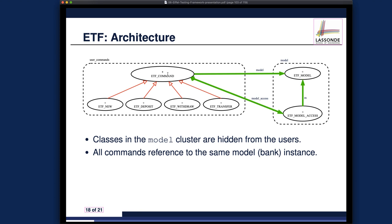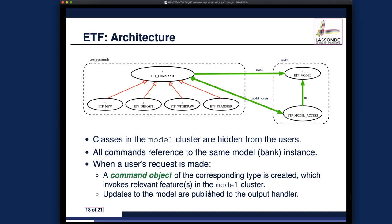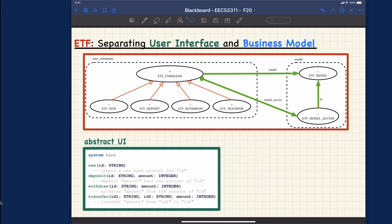You call 'etf_model_access.m' to really get the singleton reference to the model — there is only one single instance of the model that's going to be manipulated by the various commands. When the user's request is made, a command object is created and then invokes some relevant feature routines or attributes on the model cluster. Updates to the model are published to the output handler — this has to do with event-driven design, which we'll talk about when we cover the observer design pattern later.